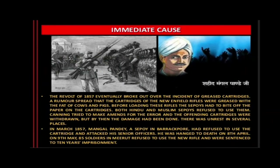Immediate cause: The revolt of 1857 eventually broke out over the incident of greased cartridges. A rumour spread that the cartridges of the new Enfield rifles were greased with the fat of cows and pigs. Before loading these rifles, the sepoys had to bite off the paper on the cartridges. Both Hindu and Muslim sepoys refused to use them. Canning tried to make amends and the offending cartridges were withdrawn, but by then the damage had been done and there was unrest in several places.